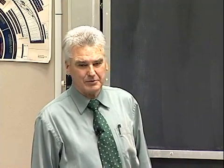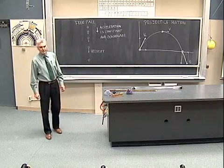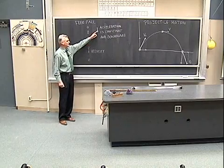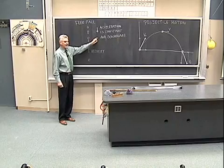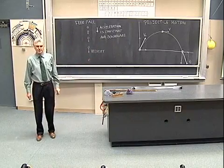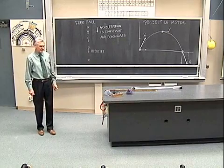We're neglecting air resistance and we're assuming that the object is being acted upon only by the force of gravity. That will cause an acceleration which is constant and constantly downward. The numerical value of that acceleration is 32 feet per second per second or 9.8 meters per second per second.